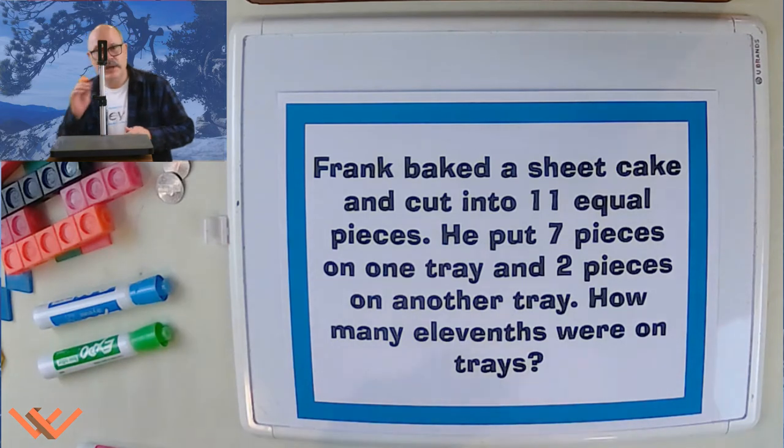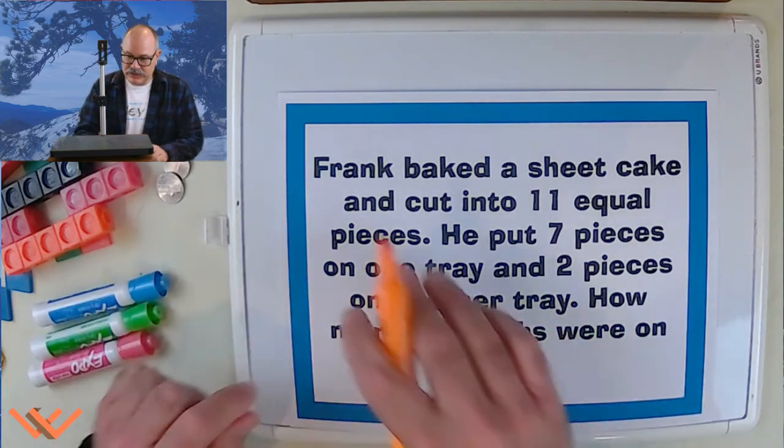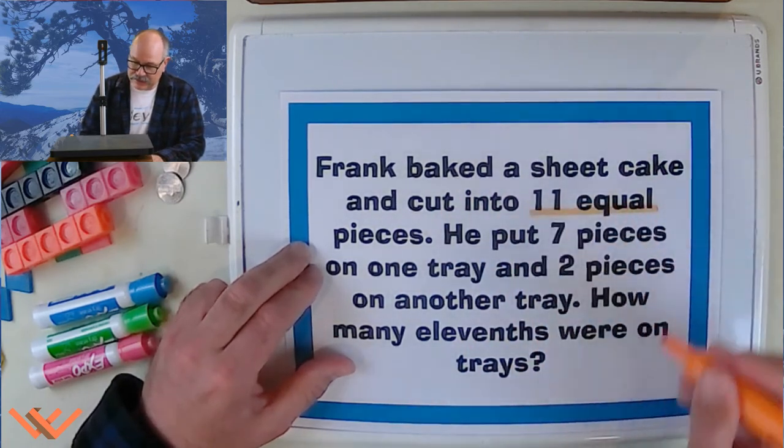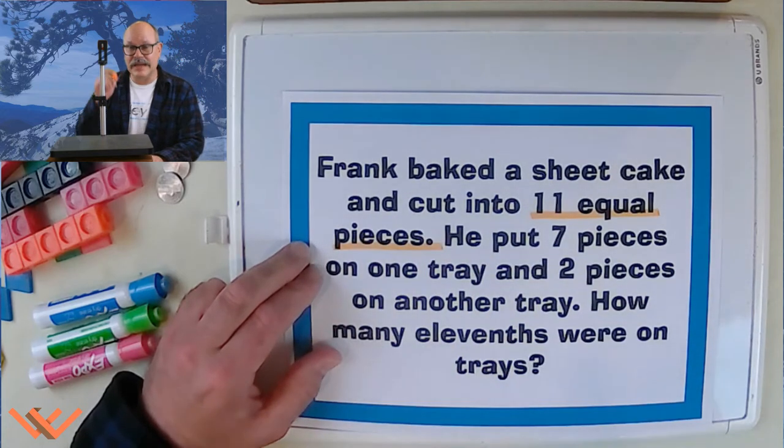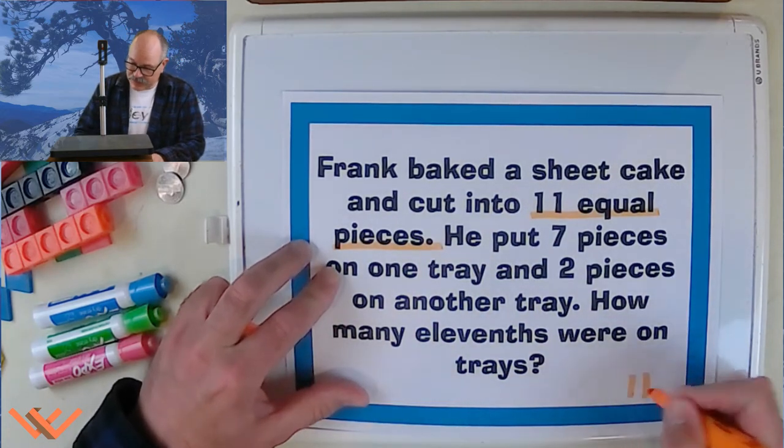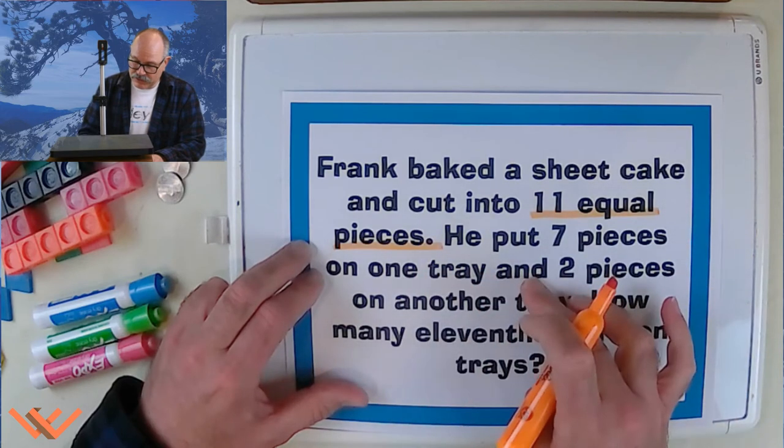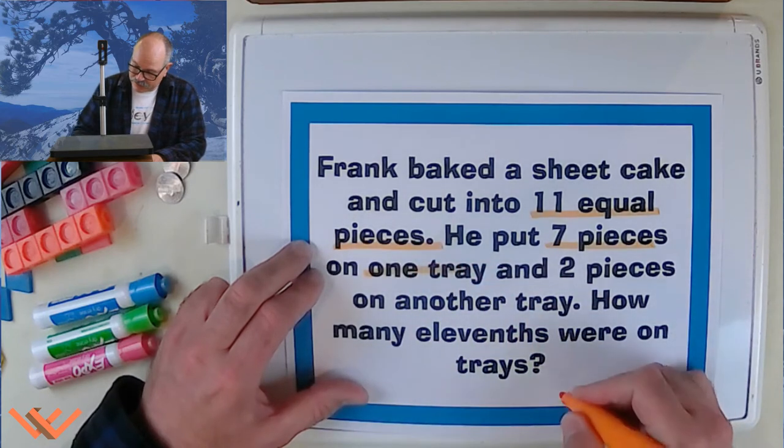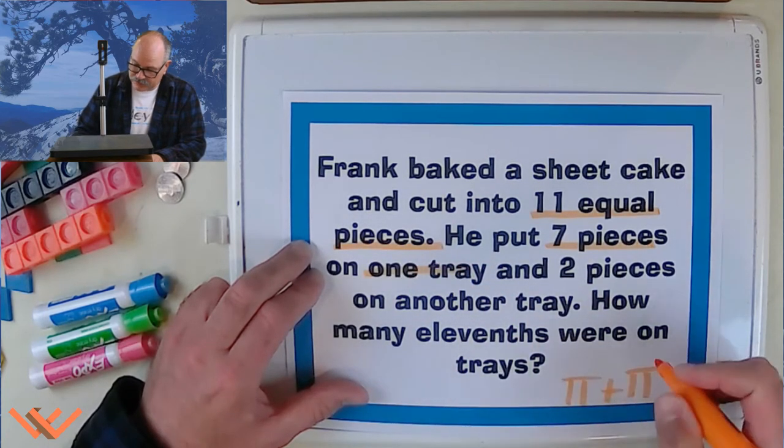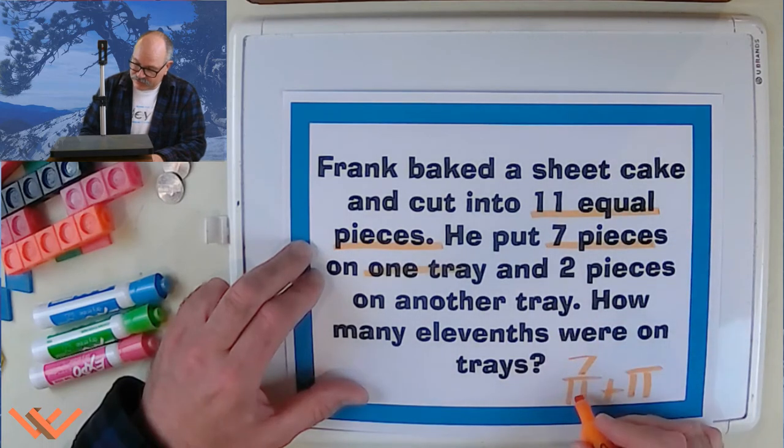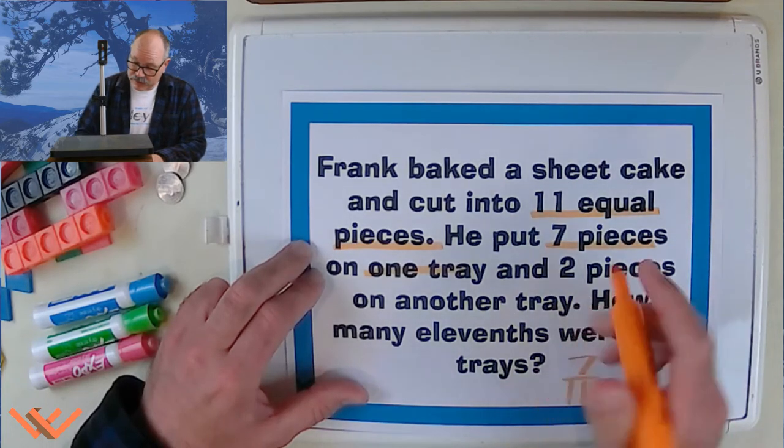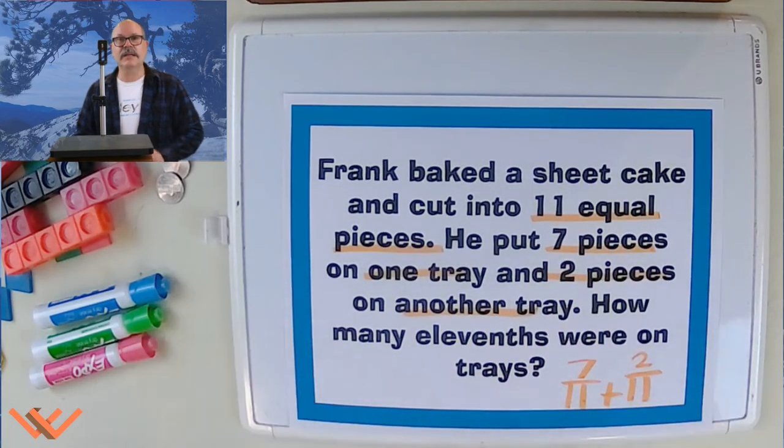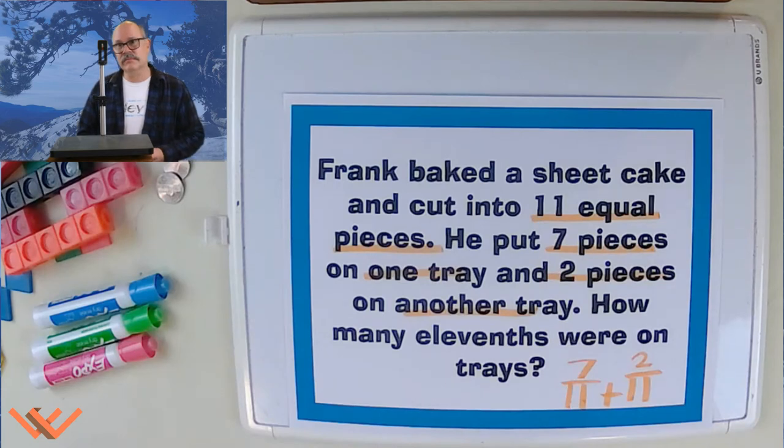So, we've got to pull this problem apart. It says, Frank baked a sheet cake and cut it into 11 equal pieces. So, I know there's at least 11 there. He put 7 pieces on one tray and 2 pieces on another tray. So, 7 pieces on one tray. Let's look at this here. So, 7 pieces on one tray, so there's 7 elevenths. And 2 pieces on another tray, so that makes 2 elevenths. How many elevenths were on the tray? Let's take a look.